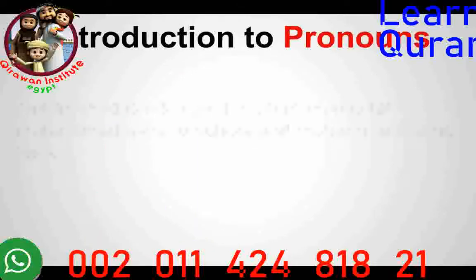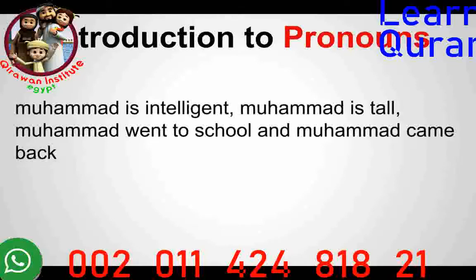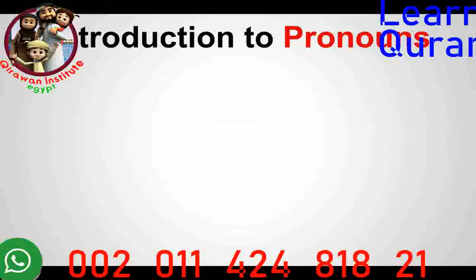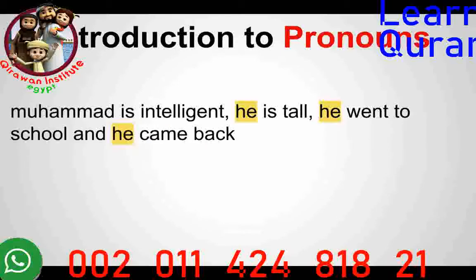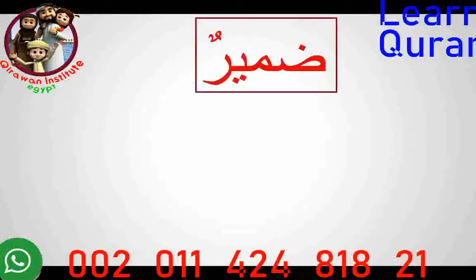If I say: Muhammad is intelligent, Muhammad is tall, Muhammad went to school, Muhammad came back — there is too much repetition. So instead we say: Muhammad is intelligent, he is tall, he went to school, and he came back. The word 'he' is called a pronoun, which in Arabic is called a Damir.